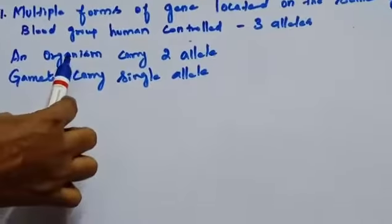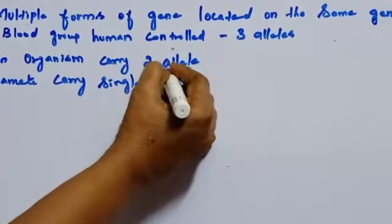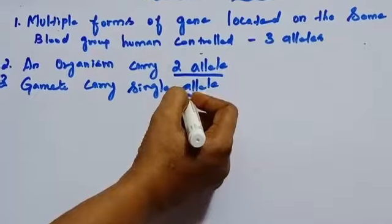But an organism, an individual organism, carries out of three only two alleles. It carries only two alleles. Gamete carry single allele.